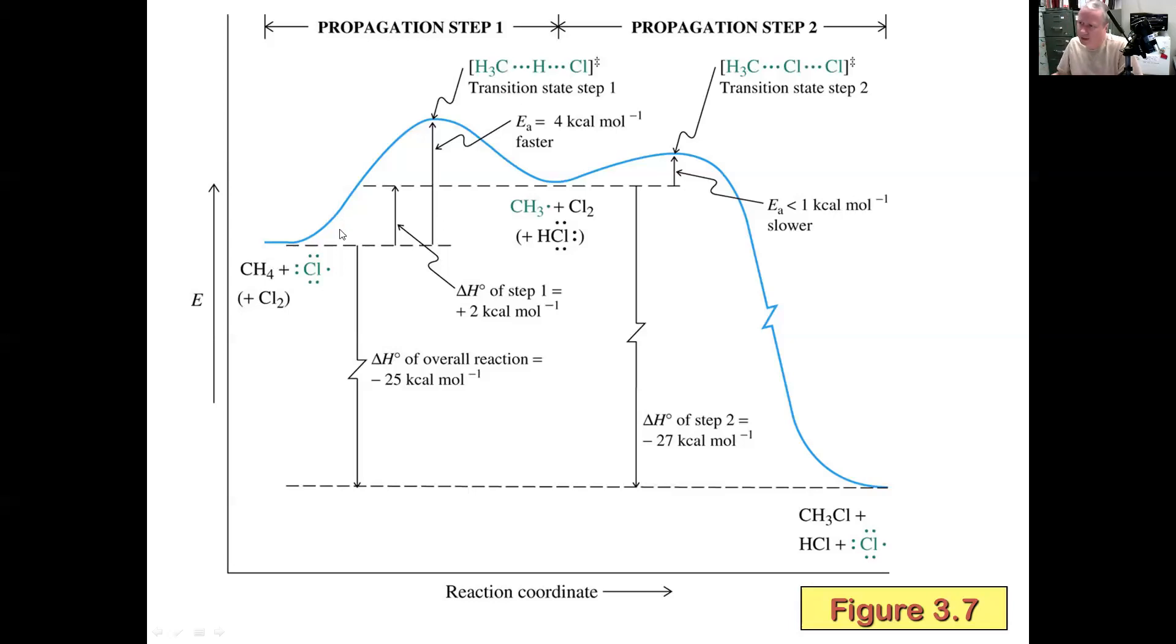Anyway, the energetics of this—like we saw, there's a little bit of an energy barrier as you go from the chlorine radical ripping off the hydrogen atom of methane. We did the mechanism of that. It's not too crazy. As these react to make methyl radical and Cl₂, it goes up in energy. But then when propagation step two occurs and the methyl radical takes the chlorine atom from Cl₂, the energy drops. We saw that it's really exothermic, right?